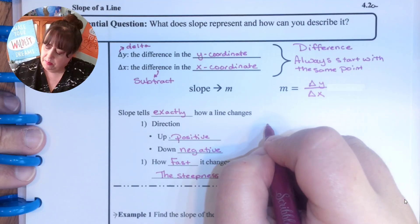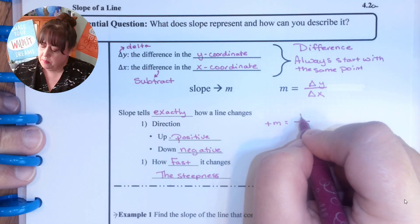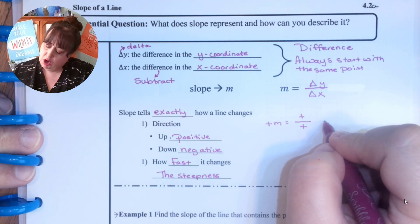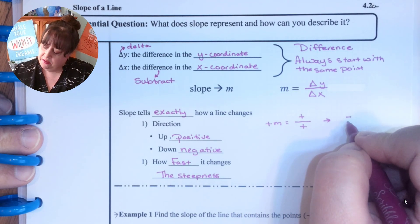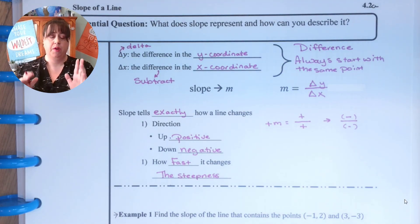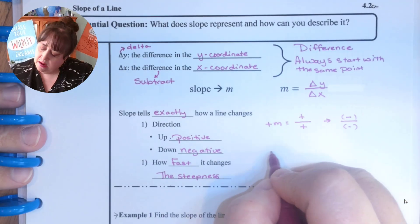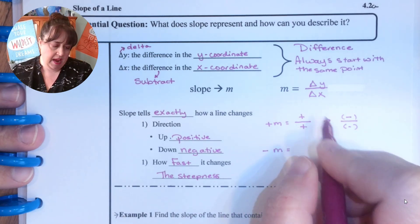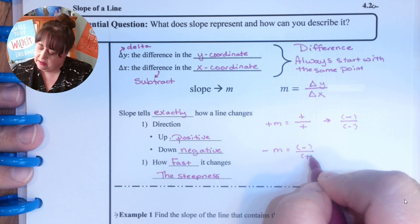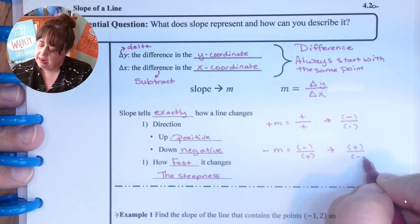So for example, if I have a positive slope my delta y over delta x will be a positive over a positive. It could also be a negative over a negative if we were to read it right to left instead of left to right. A negative slope would be a negative over a positive. It could also be a positive over a negative.